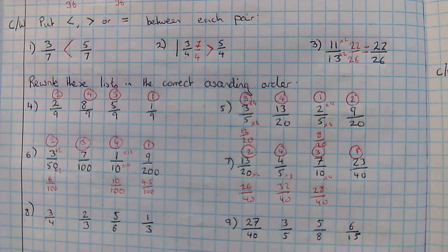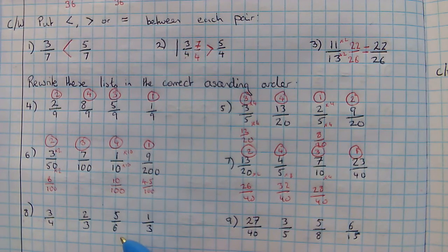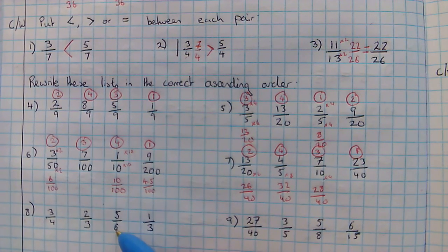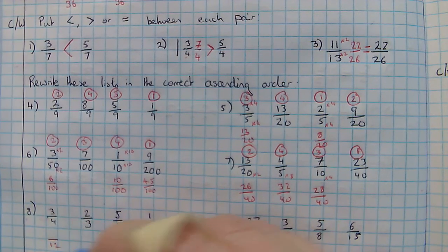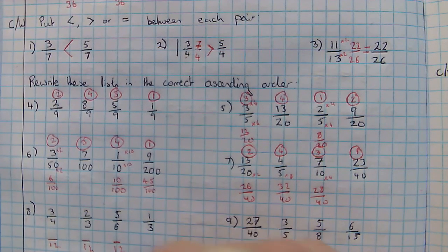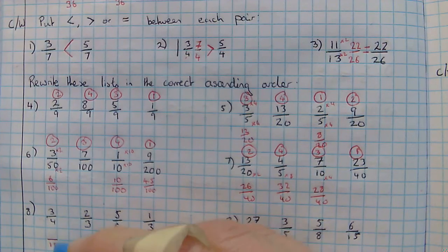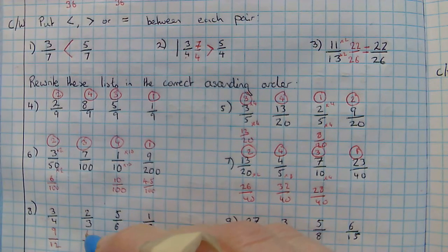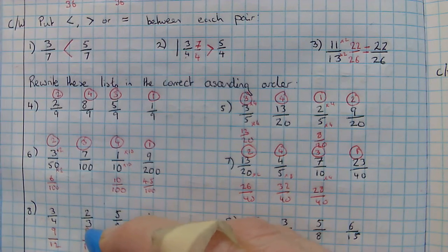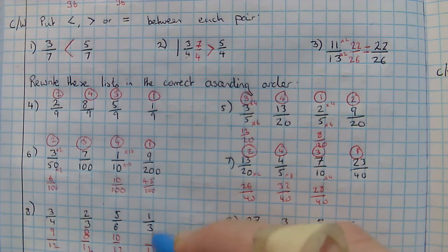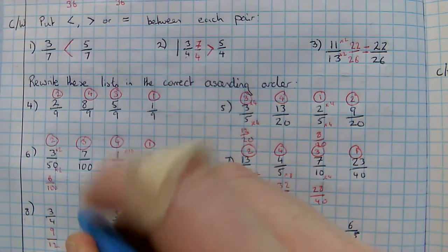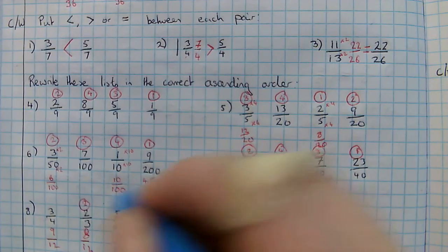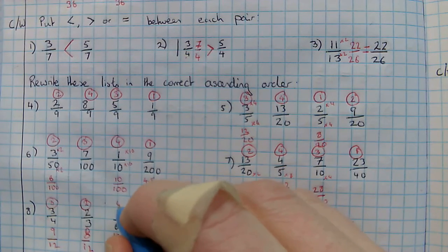Here it gets a bit more difficult. Six is the biggest denominator, but four doesn't go into six, so let's go up our six times table. My next number in the six times table is twelve. Four and three both go into twelve, so I'm going to put everything out of twelve. Times by three gives me nine, times by four gives me eight, times by two gives me ten, times by four gives me four. So the smallest is going to be one-third, followed by two-thirds, followed by three-quarters, followed by five-sixths.